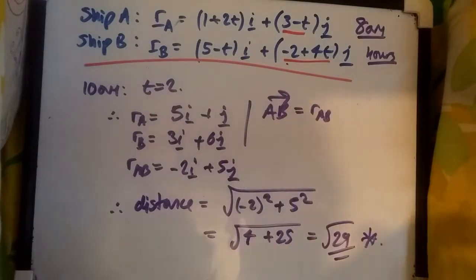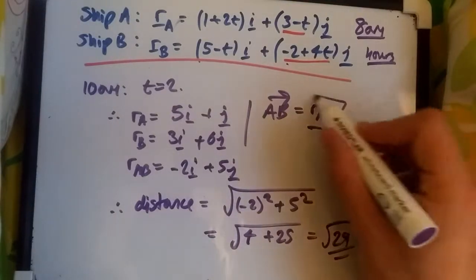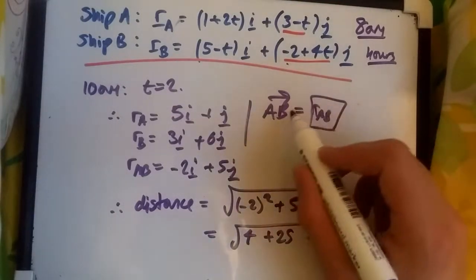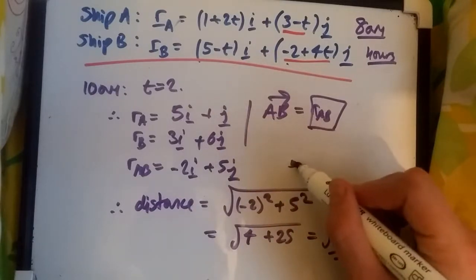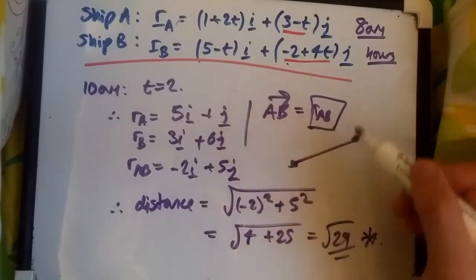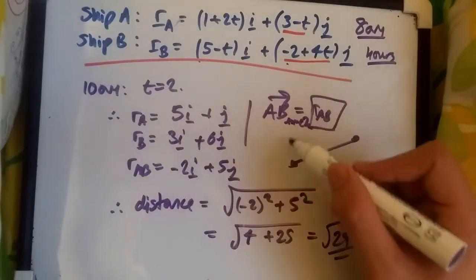Of course you can get the exact value if you put it in a calculator. But yeah guys, that's literally how you find the distance between two ships at any given time. Always clearly define your vector component. The notation AB means you're going from point A to point B at whatever time, and this is obviously at time 2 or 10 a.m.